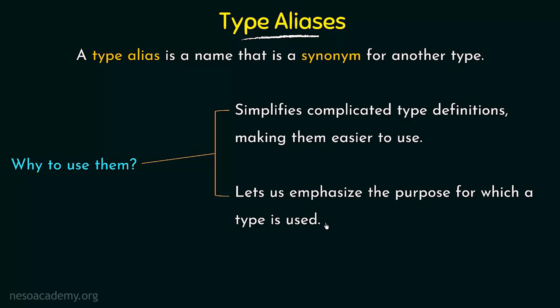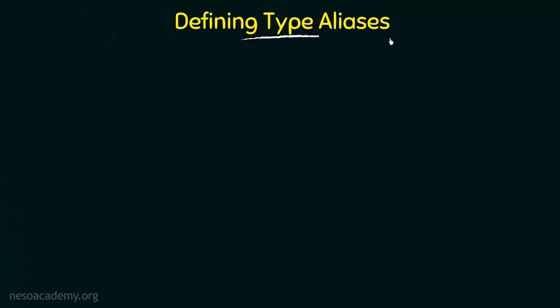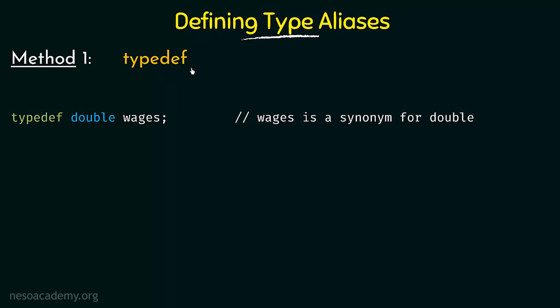Let us see the methods or ways in which we can define type aliases with examples. There are basically two methods. The first one is using typedef. The keyword typedef is used — here we see a familiar type called double, and we give it a name called wages. What this means is wages is a synonym for double, so instead of specifying double in the next declaration, you can say wages instead.